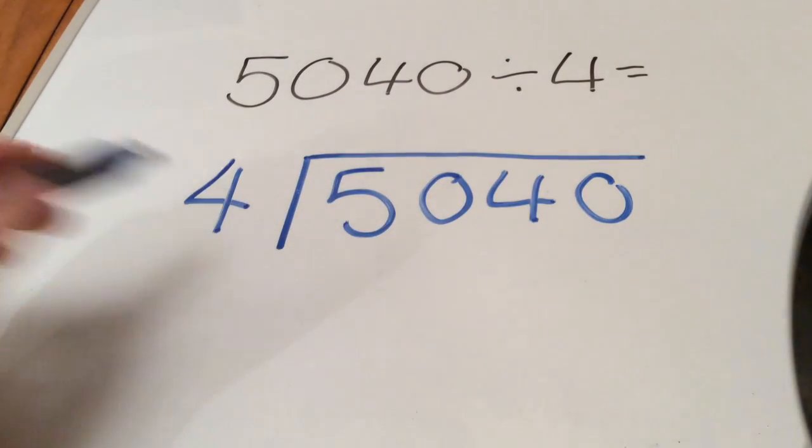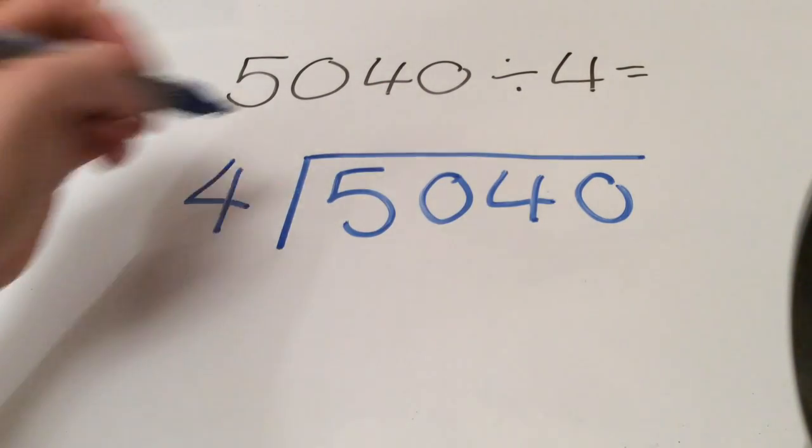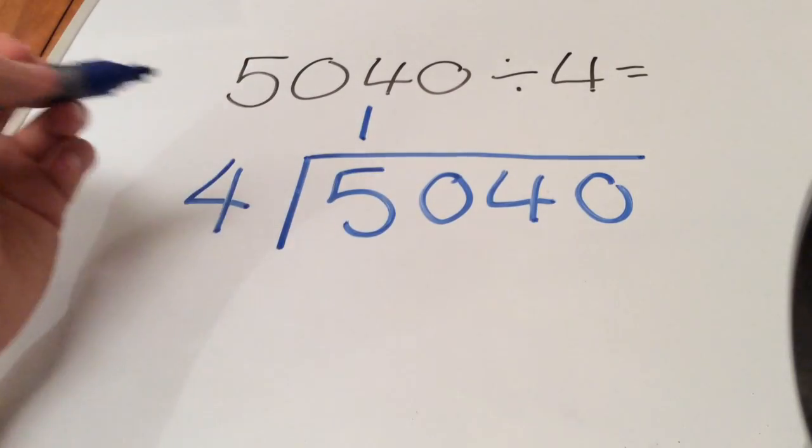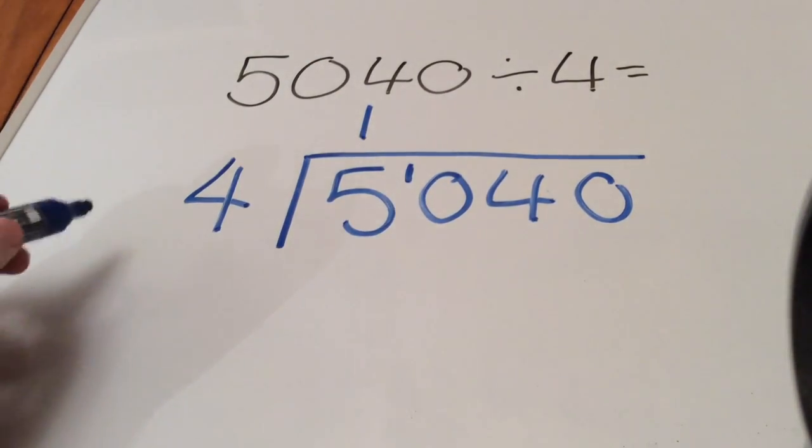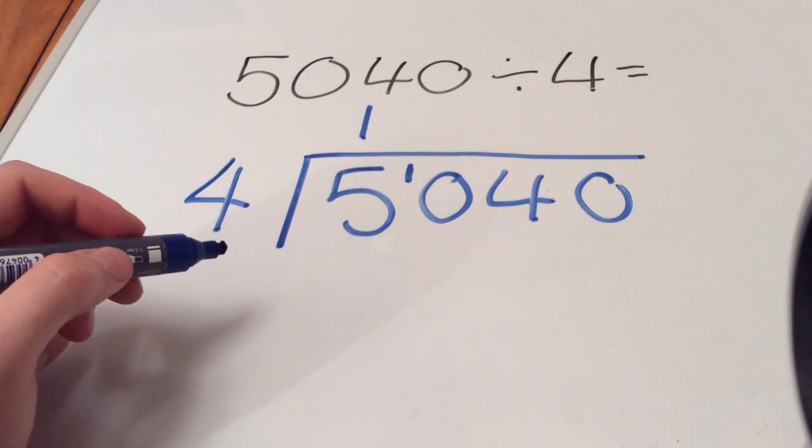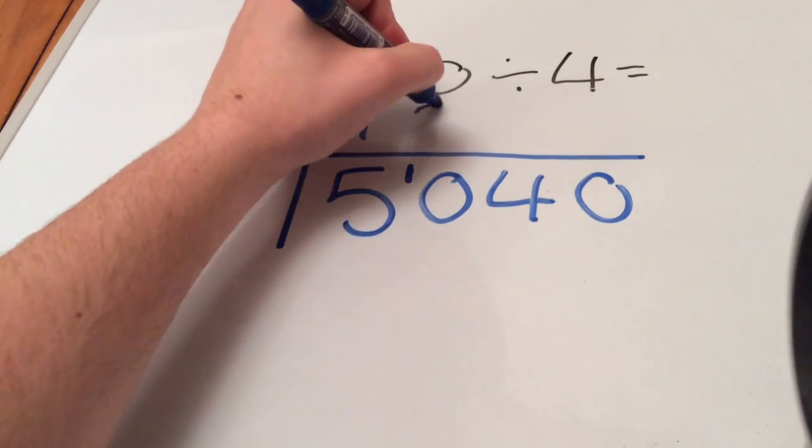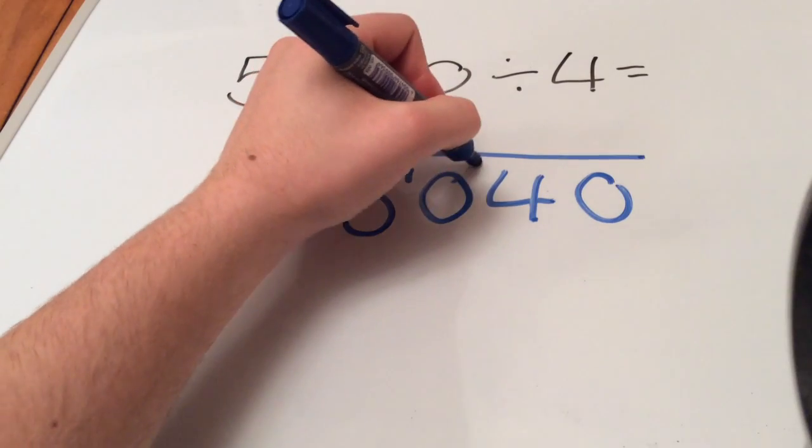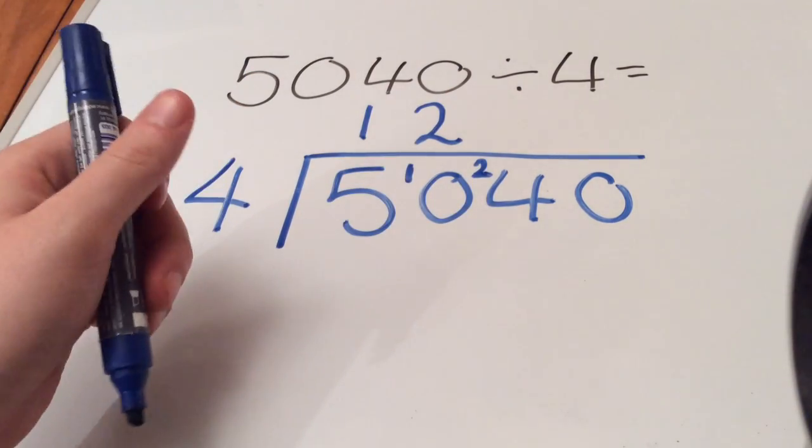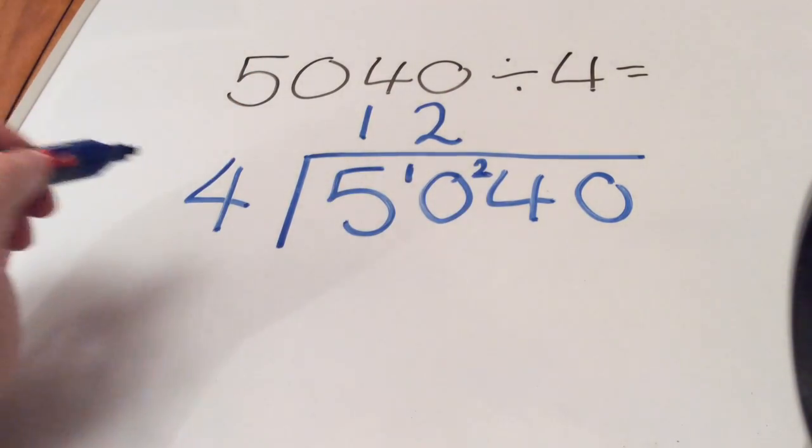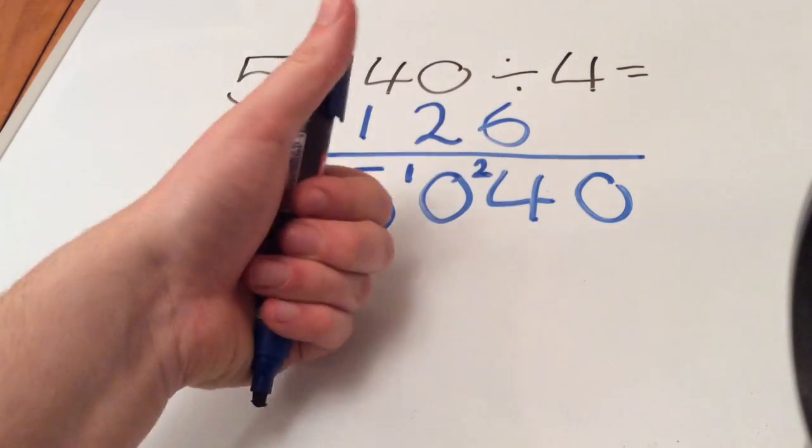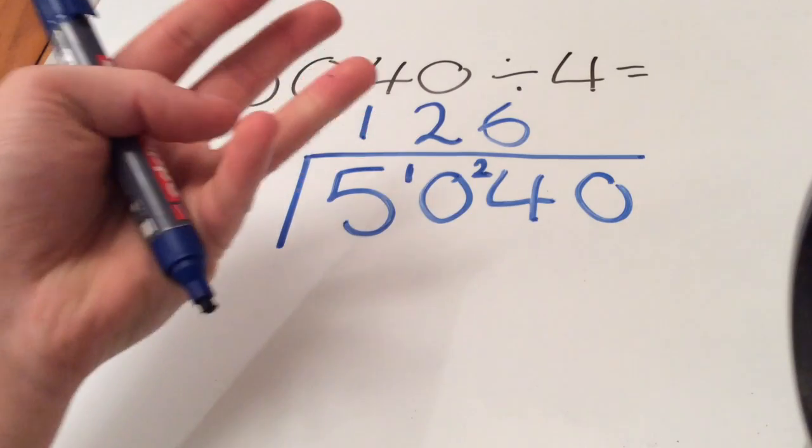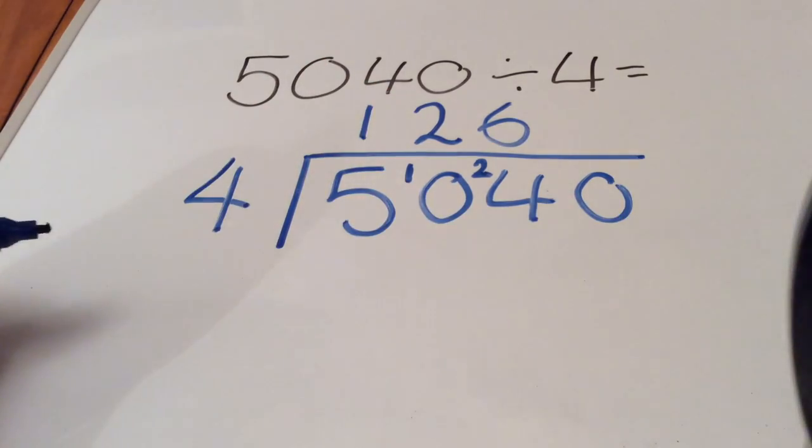How many times can we get 4 into 5? Well we can get 1 but we still have 1 left over, so we carry that over. How many 4s can you get into 10? Well we can get 2 and then we have 2 left over because we can only get as far as 8 with our 4 times table. How many can get into 24? We can get 6: 4, 8, 12, 16, 20, 24 is 6. How many 4s can we get into 0? 0. So our final answer is 1260.